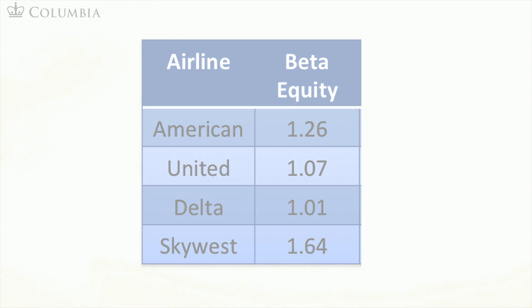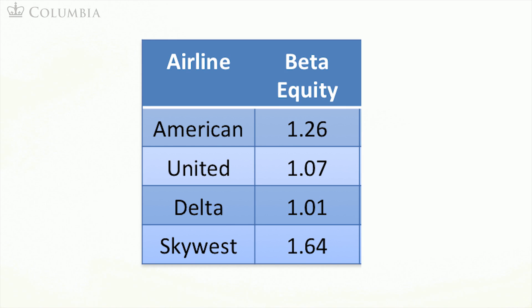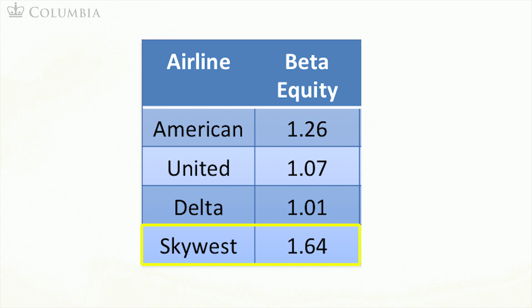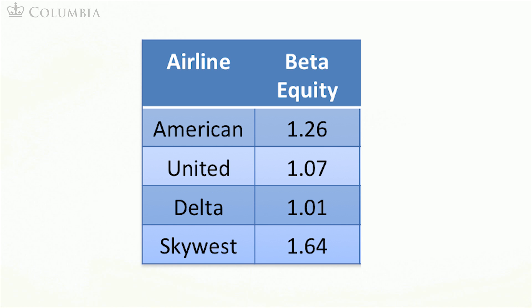Yet, when we look at our measure of risk, beta, we see that they have very different risk. Delta has a beta of only 1.01, while SkyWest has a beta that is more than 60% higher, at 1.64. All other airlines fall in between.